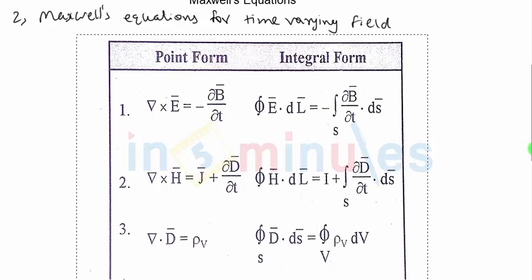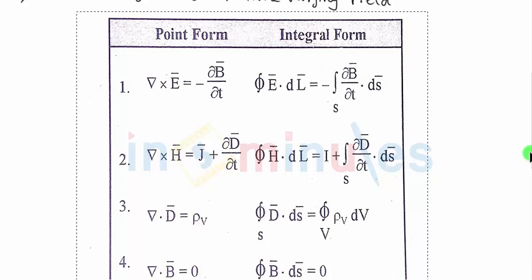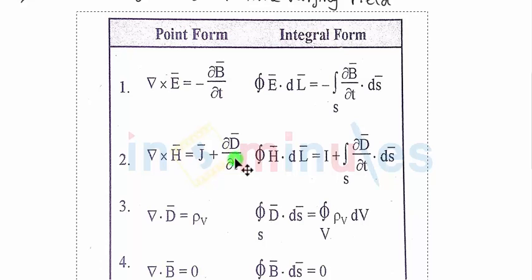Maxwell's second equation is obtained from Ampere's circuital law. It states that del cross H-bar is equal to J-bar plus the partial derivative of D-bar with respect to time.